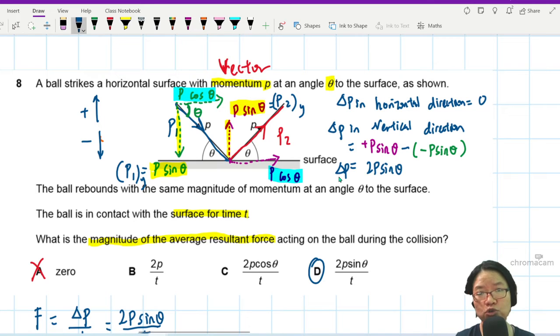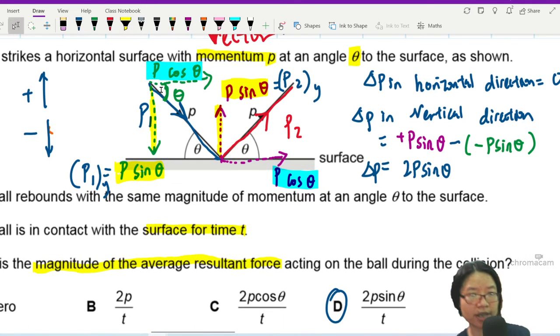So this is one method. Whenever there is a vector, you have two choices. I split the initial vector into x and y components. I split the final vector into x and y components. And then I examine which component has changed. For example, p cos theta didn't change. p sin theta reversed direction. So the magnitude of change is two times.